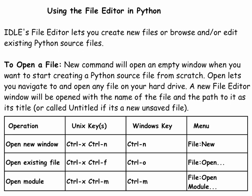Editing files in Python is done with the IDLE file editor, which lets you create new files or browse or edit existing Python source files. To open a file you can use the new command option. The new command will open an empty window when you want to start creating a Python source file from scratch. Open lets you navigate to and open any file on your hard drive. A new file editor window will be opened with the name of the file and the path to it as its title. It will be titled untitled if it is a new and unsaved file.